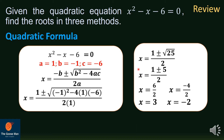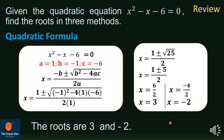Simplifying further, x equals 1 plus or minus the square root of 25, which is 5, all over 2. Separating into two cases: x equals (1 plus 5) over 2 equals 6 over 2 equals 3; and x equals (1 minus 5) over 2 equals negative 4 over 2 equals negative 2. Therefore, the roots are 3 and negative 2 using the quadratic formula.